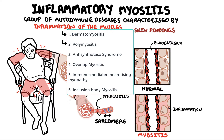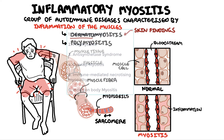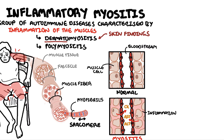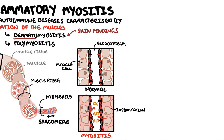Each of these have their own unique features. Common among these conditions is an elevated creatine kinase, a muscle enzyme released into the bloodstream during muscle inflammation. You also get other elevated enzymes — AST and ALT — which are typically known as liver enzymes, but these can also be found in muscles.